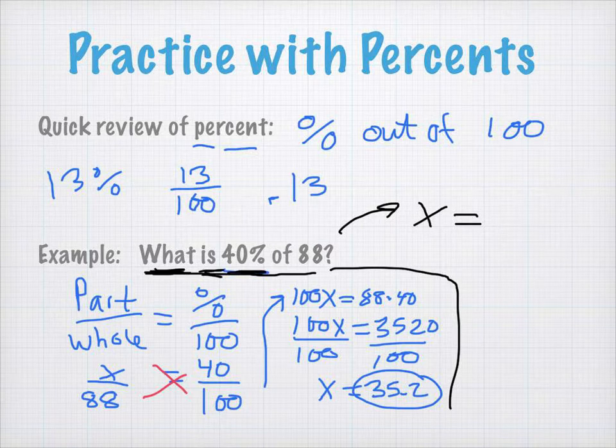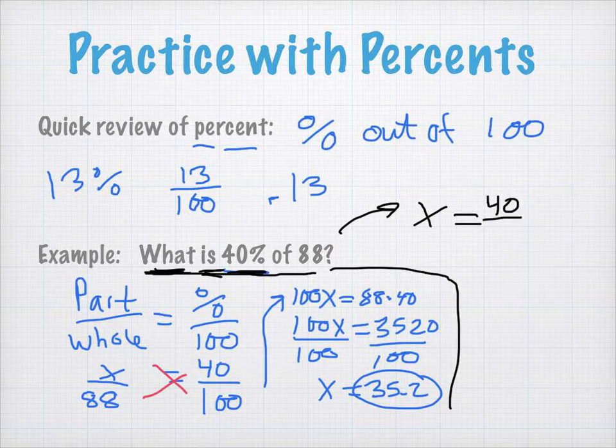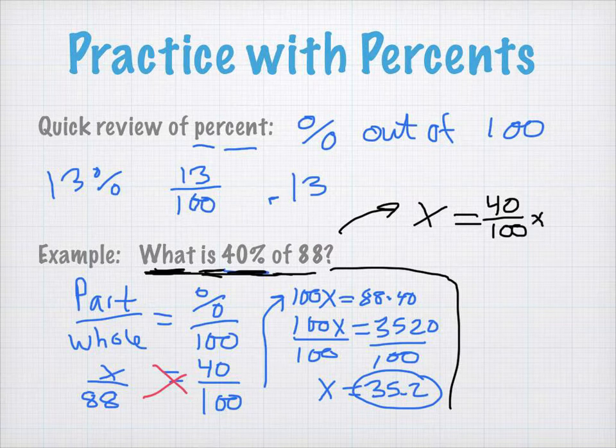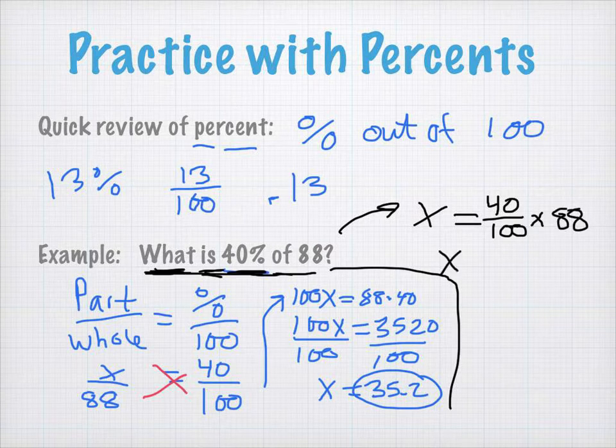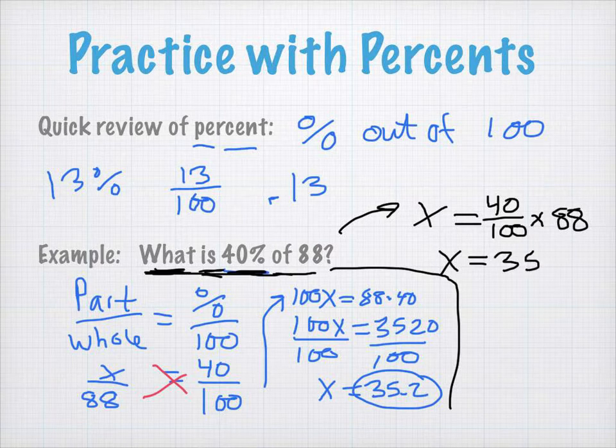Is, is represented by equal to. 40% in order to write 40% in terms of a mathematical statement, we can write it in its decimal or fraction form. So, I know a percent is some part out of 100. So, 40 out of 100. Of is multiplication. And then, 88. And what you get here is, let's solve for x. x is equal to 40 over 100 times 88. If you multiply that out, you get 35.2.